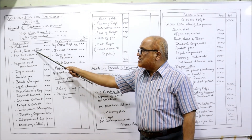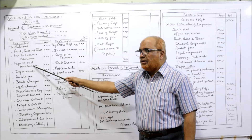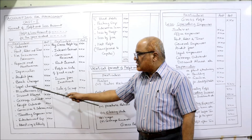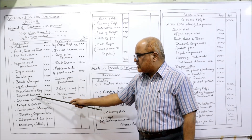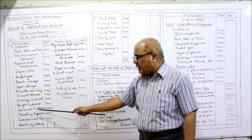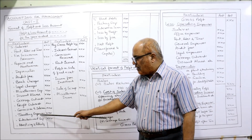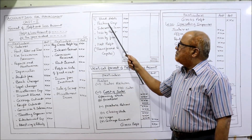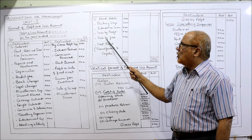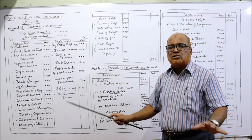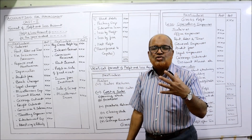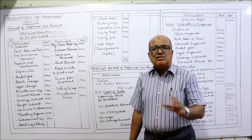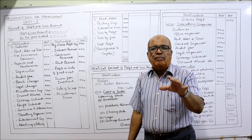Examples of indirect expenses on the debit side include: salaries, wages, rent, rates and taxes, insurance premium, repairs and maintenance, depreciation, audit fees, bank charges, legal charges, miscellaneous expenses, discount allowed, carriage outward, freight outward, commission to salesmen, travelling expenses, entertainment expenses, advertising and publicity, bad debts, packing expenses, interest on loan, loss by theft, loss by fire, etc. These are illustrative examples — not every problem will have all these items.